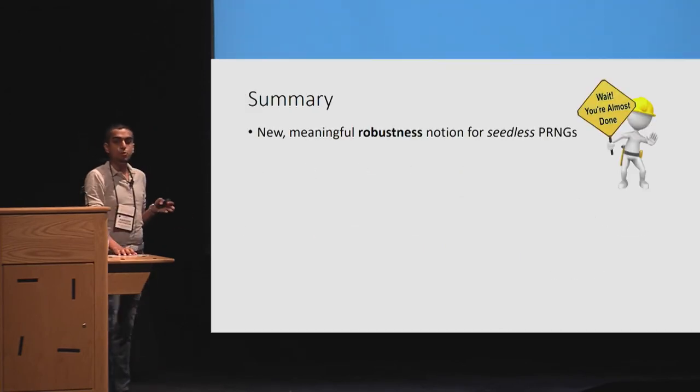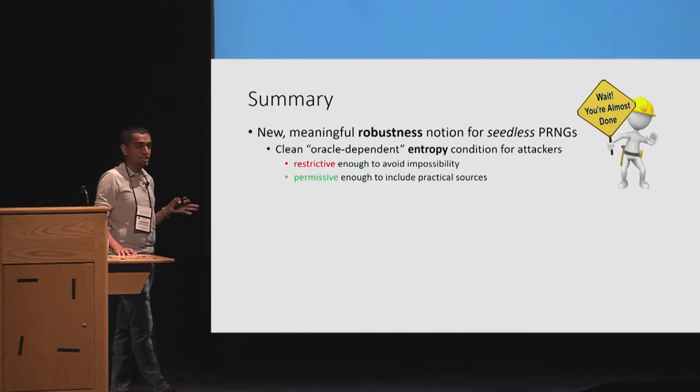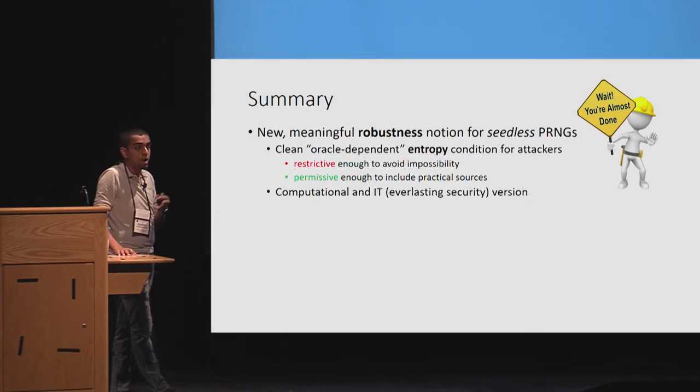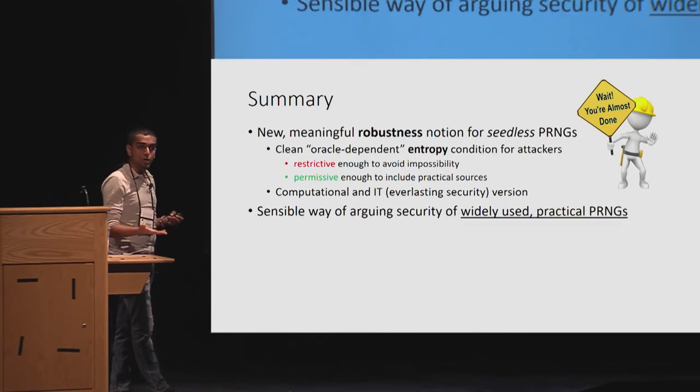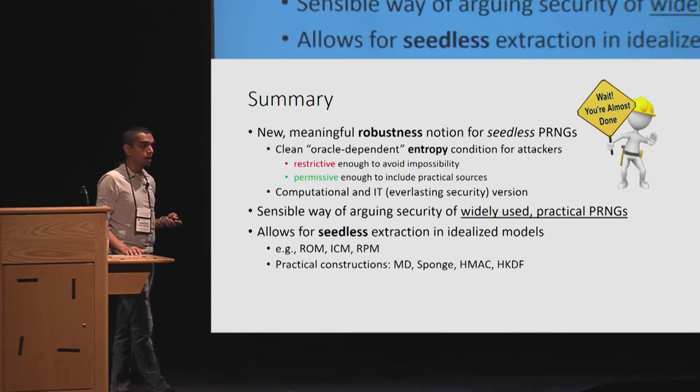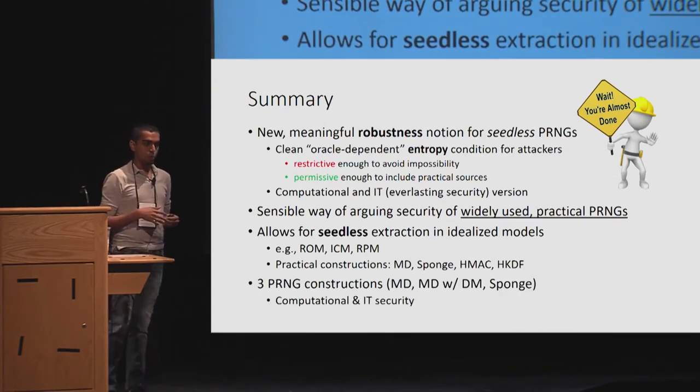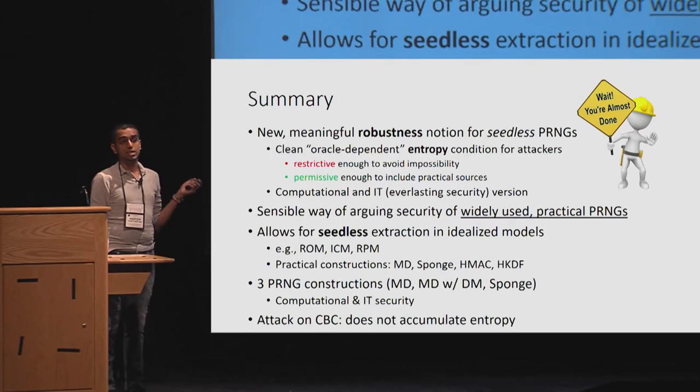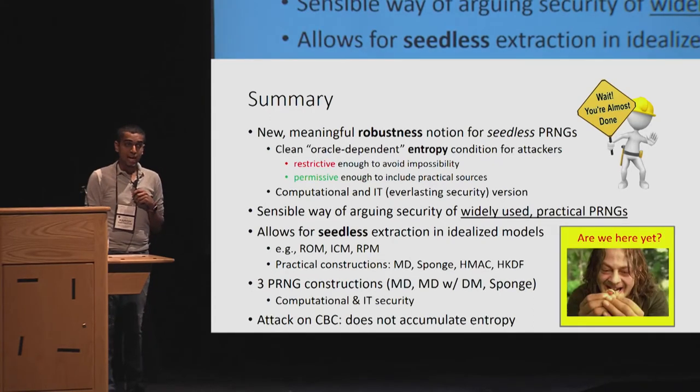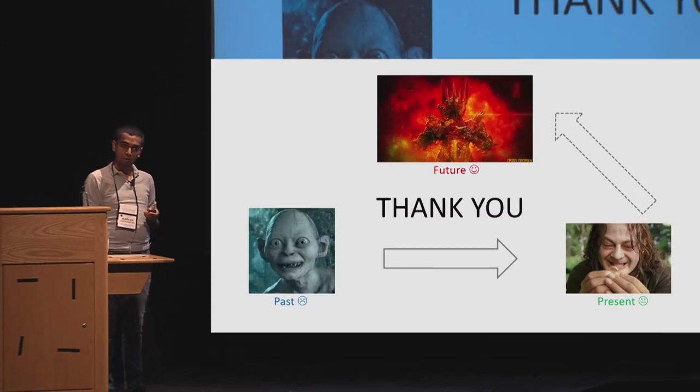Summary. What have we done? We have a new meaningful robustness notion for seedless PRNGs. It's a clean, oracle-dependent entropy condition for attackers, which is restrictive and permissive. Restrictive enough to avoid impossibility, but permissive enough to have a larger pool of sources. And we prove it secure. We have both the computational and IT version. We have a sensible way of arguing the security of PRNGs that are widely used. We allow for seedless extraction in idealized models. And we do have three PRNG constructions, which we prove both computational and IT secure. And we also show an attack on CBC to show us that it does not accumulate entropy. So are we ahead? I think we are. Or at least we are close to it. So hopefully this sets us on a path where we unlock the demon of Sauron. Thank you.